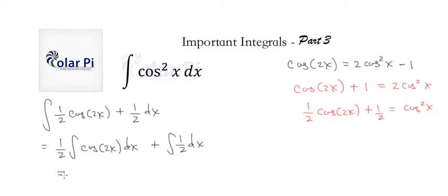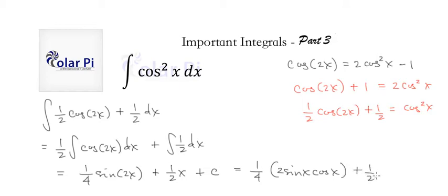And this in turn is going to be quarter sine 2x. I explained in detail why it's got to be a quarter in part two, so watch that if you're not sure why it's got to be a quarter. And then plus half x plus c. And we could also write this alternatively as one fourth times two sine x cosine x, as sine 2x is two sine x cosine x, and then plus a half x plus c.